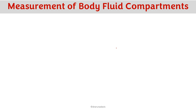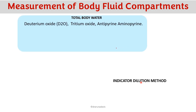To measure the different body fluid compartments, we use the indicator dilution method — we inject an indicator and find out its volume of distribution. To measure total body water, the indicators used are deuterium oxide, tritium oxide, antipyrin, and aminopyrin.